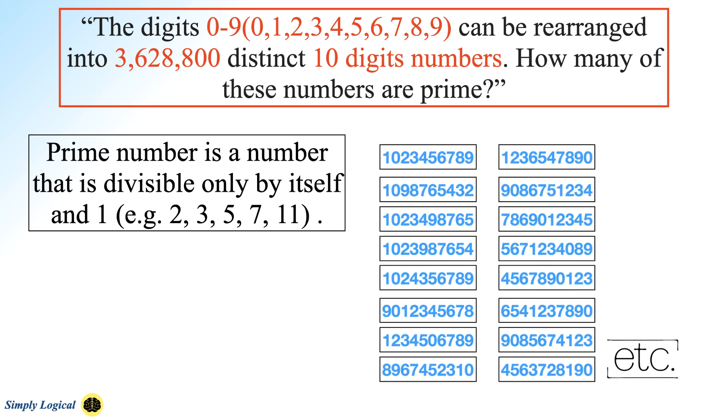The digits 0 to 9 can be rearranged into many distinct 10-digit numbers. Your task is to find all the prime numbers formed using the digits 0 to 9. Feel free to pause the video and give a try before checking the solution. If you are new to the channel, do subscribe to the channel.